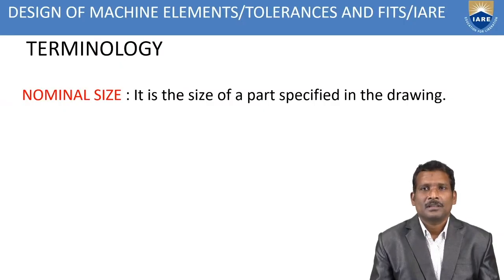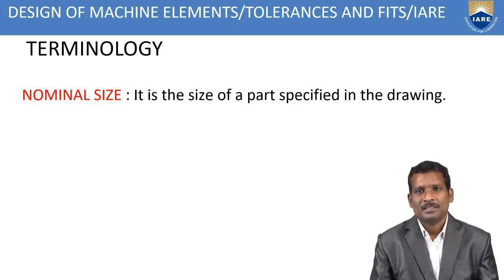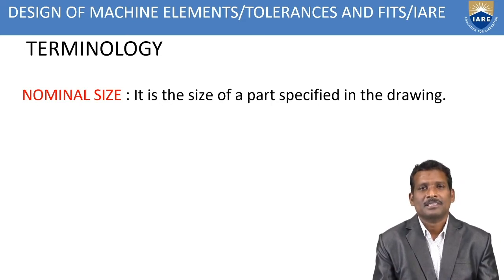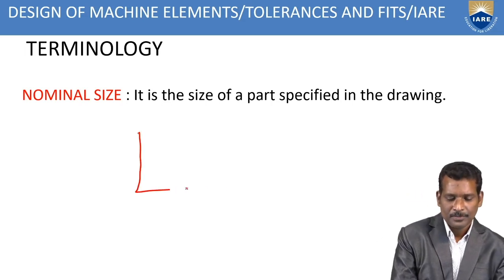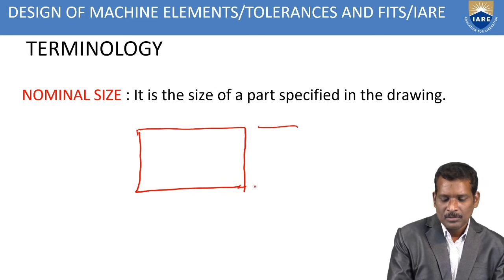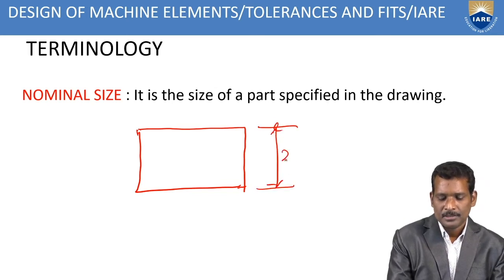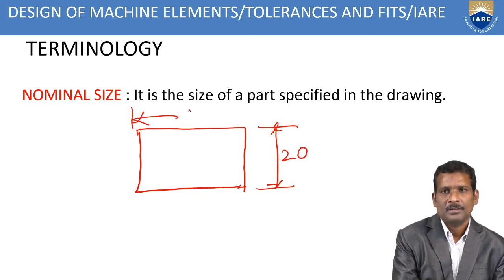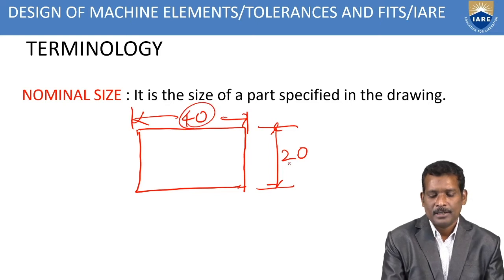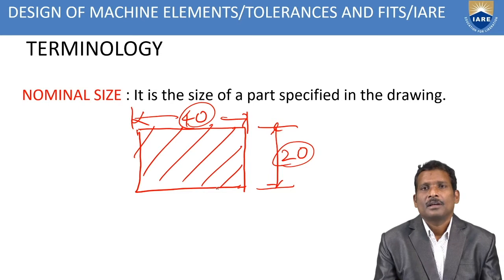What is Tolerances and what is Fits? I will explain. The basic terminology: the first one is nominal size. It is the size of a part specified in the drawing. Whatever dimensions you specify for the component, that is called the nominal size. For example, a component element with dimensions 40 and 20 — these are called the nominal size of the component. The length is 40 and, imagining this is a cylindrical part, 20 is the diameter.